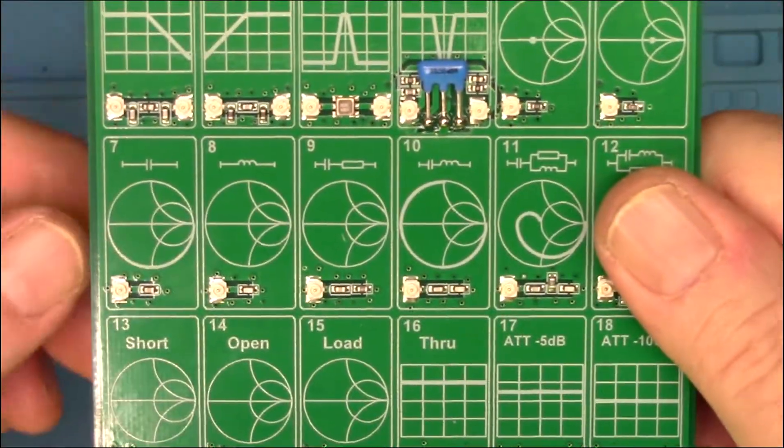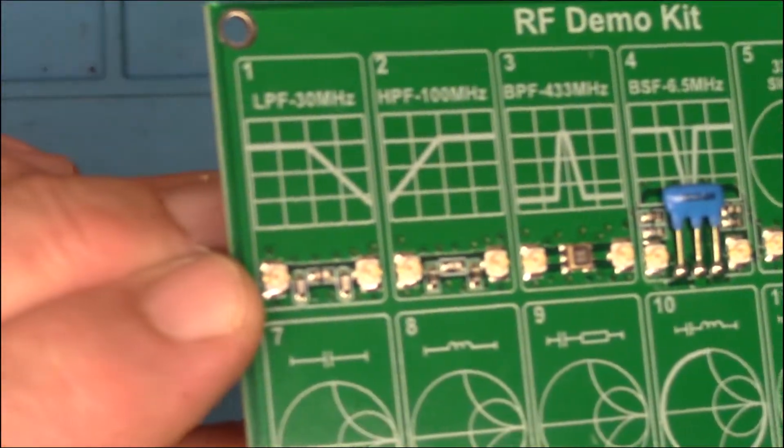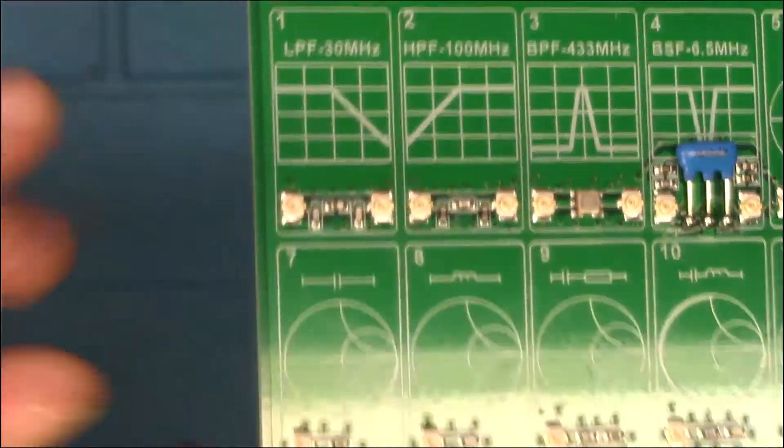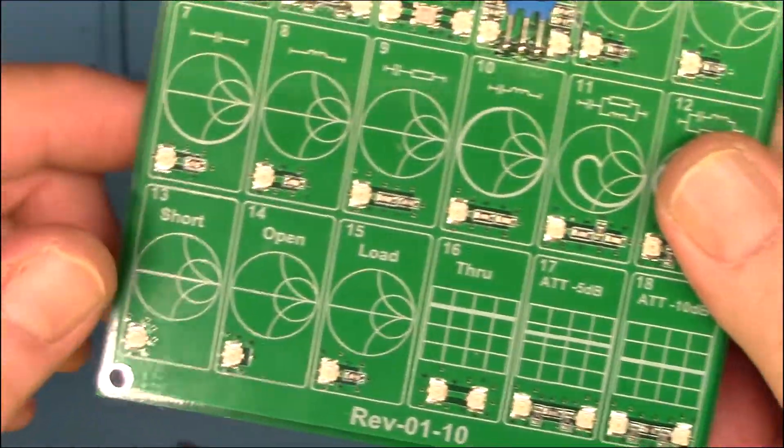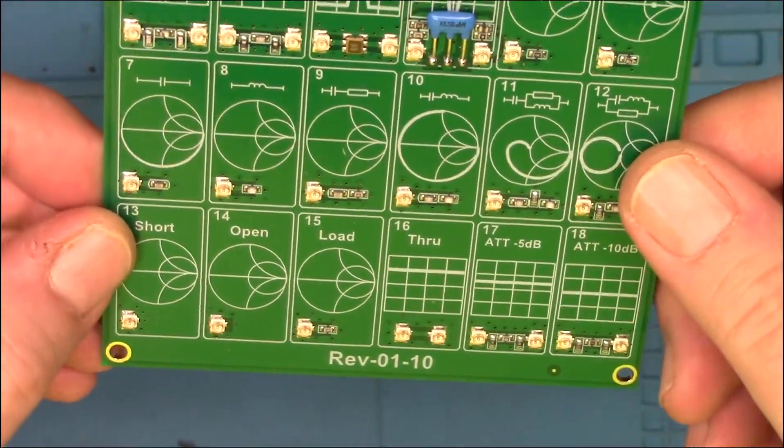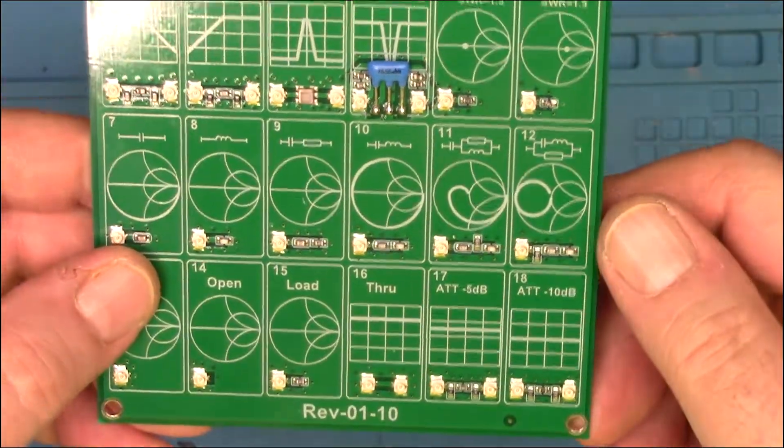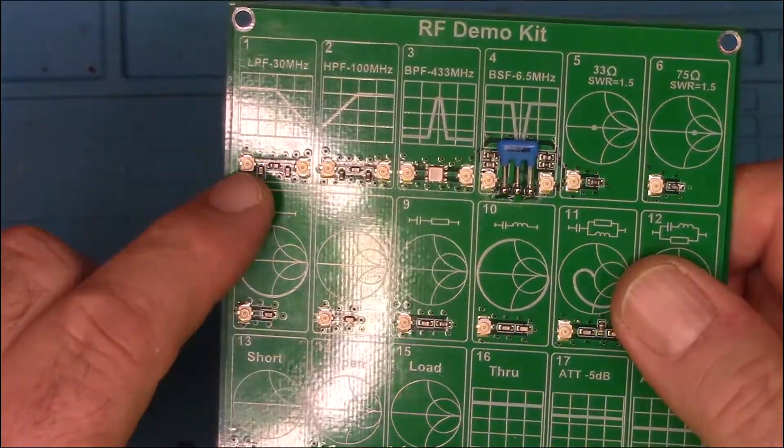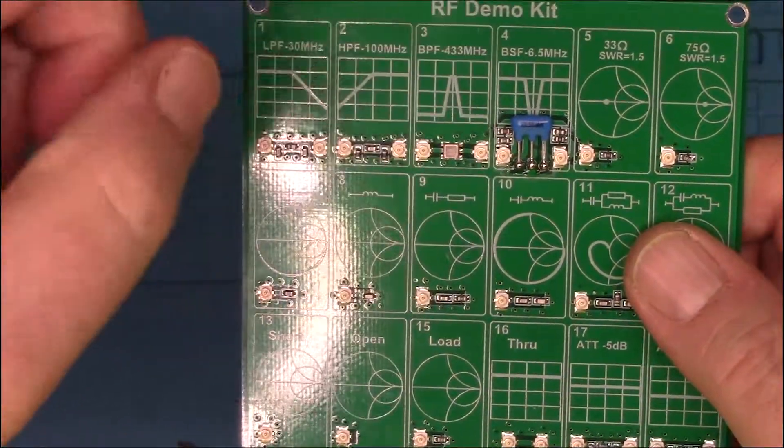You got two cables with this. It's the female end of this connector here out to a male SMA. They're about six, eight inches long for hooking up to a Nano VNA or whatever. I need to find out what the name of this is and I'll put it in the show notes below.